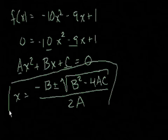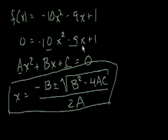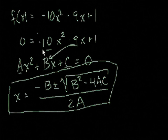Let's apply the quadratic equation to our equation. Remember: a is the coefficient on the x squared term, b is the coefficient on the x term, and c is the constant. So for negative 10x squared minus 9x plus 1: a is negative 10, b is negative 9, and c is 1.